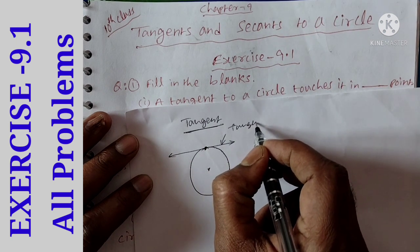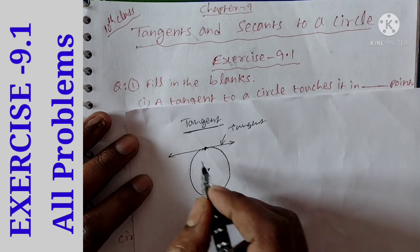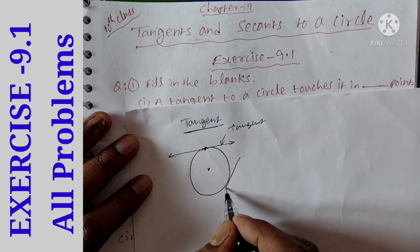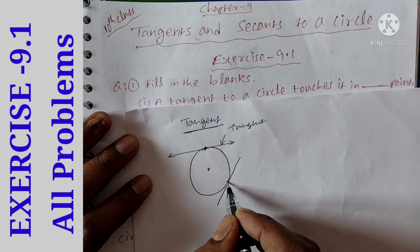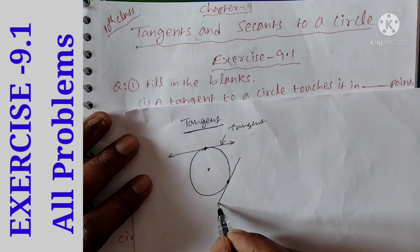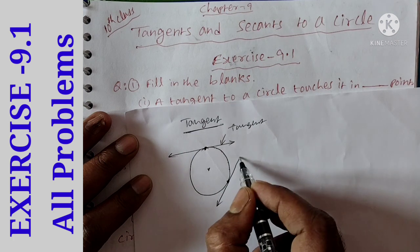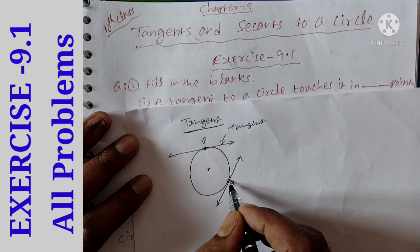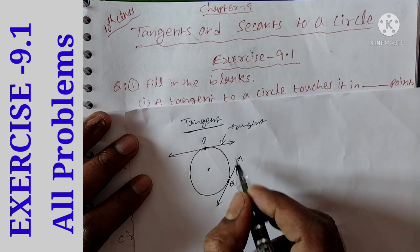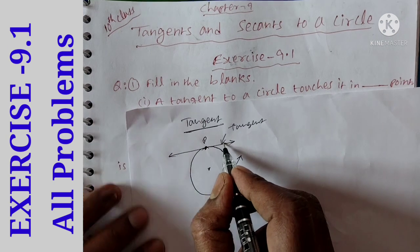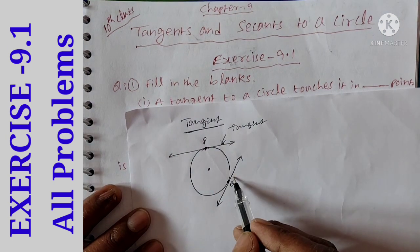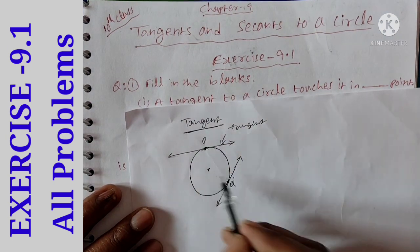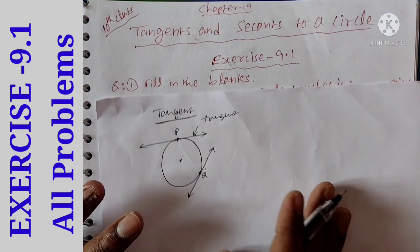This is a tangent. If you touch the circle, a line touches at point P and Q. So this is the tangent — it touches at exactly one point.